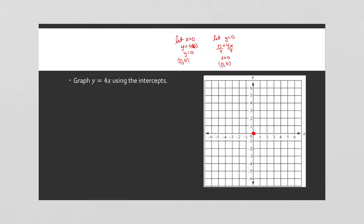We need to use a table instead. We already know (0, 0). If x = 1: y = 4(1) = 4. If x = −1: y = 4(−1) = −4. Now we have enough points to graph the line. Go right 1 up 4 from the origin for one dot, and left 1 down 4 for another. Connect the dots, label at least the intercept, and write the equation of the line. Sometimes you have to revert to a table — and that's totally okay.